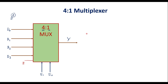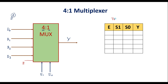Now let me write the truth table for the 4-to-1 multiplexer. Here E is the enable signal, S1 and S0 are the select lines, and Y is the output. When the enable line is 0, irrespective of S1 and S0 — whether they are 0 or 1 — the output is always 0. To make the 4-to-1 MUX active, the enable signal must be 1.